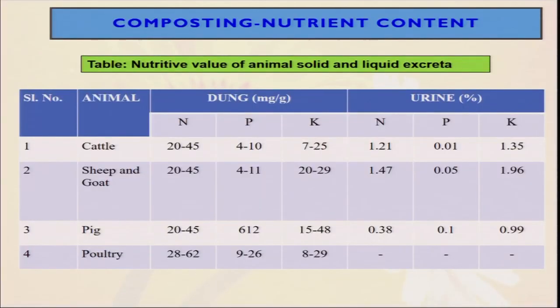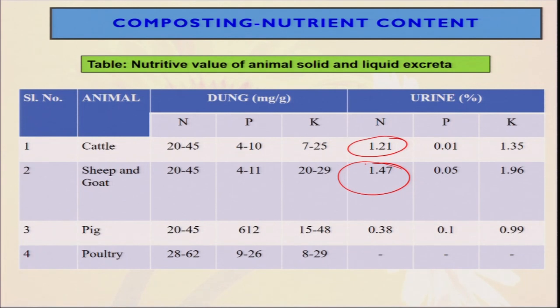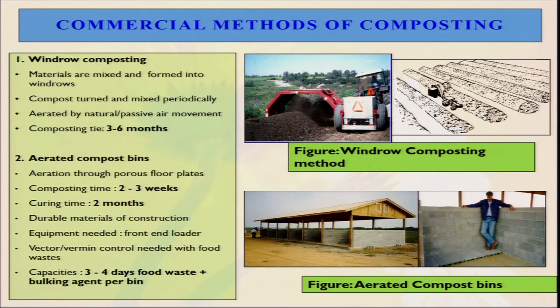Looking at the nutrient content — the same dung going through different processes shows what nutrient value we get. The urine content of N, P, K is 1.21 percent and 1.47 percent, so we can see in case of liquid excreta, the nutritive value is very good. There are also commercial methods of composting — previously we discussed the small methods like Bangalore method, NADEP method, Indore method, and Coimbatore method — these are mostly developed keeping in mind the farming community, whether big farmers or small marginal farmers.